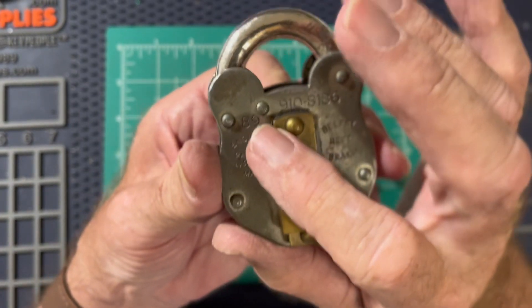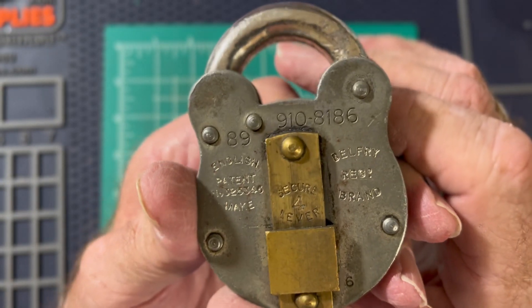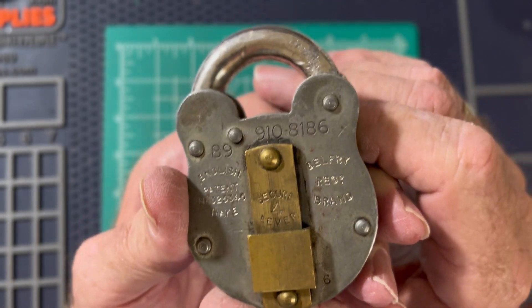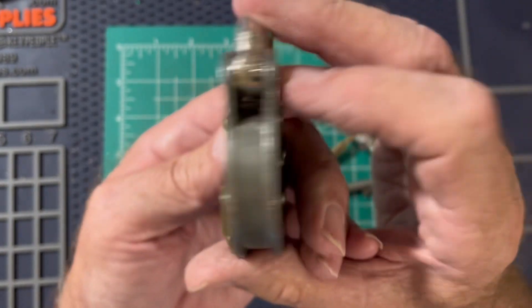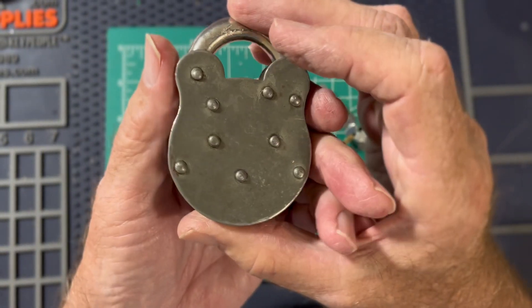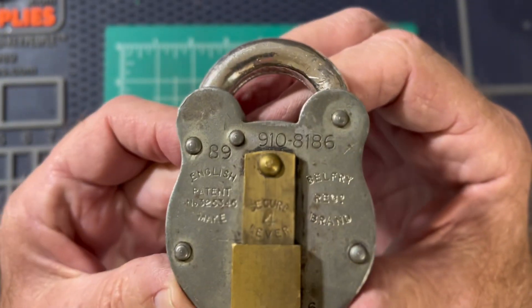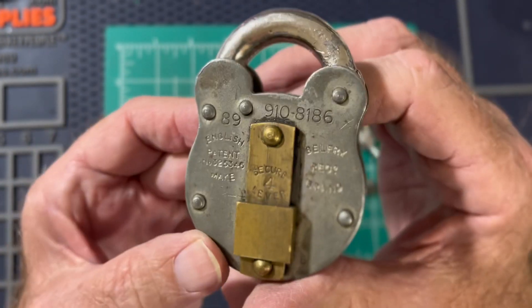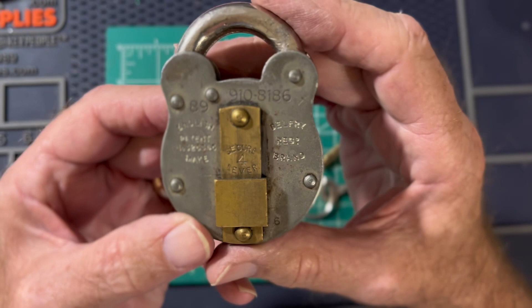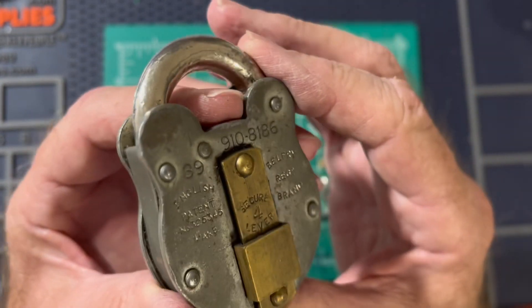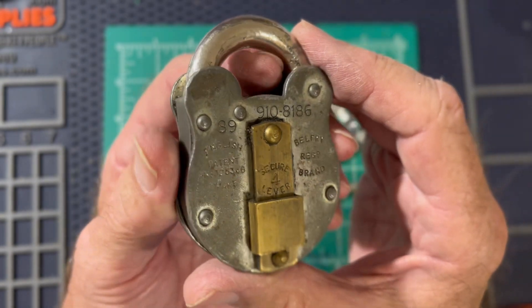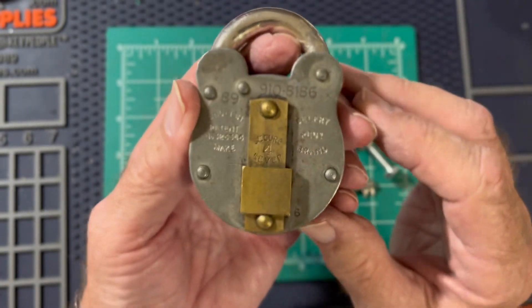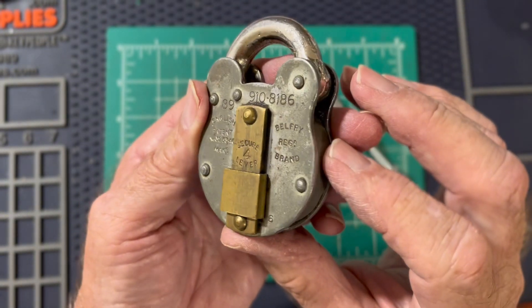These other numbers - 89, 9, 10, 3, 1, 8, 6 - I believe indicate that this was used by the British military, but I cannot be 100% positive of that. Chris Jones could tell you; he's an expert on this sort of thing, but I do believe these are military numbers.